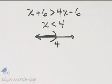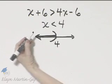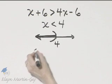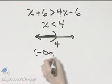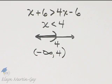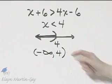How do you write it in interval notation? Follow your shading from left to right and that would be from negative infinity to 4 with a parenthesis. So here it is in interval notation.